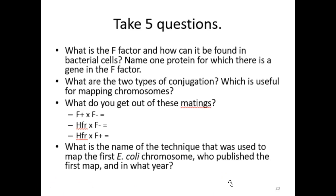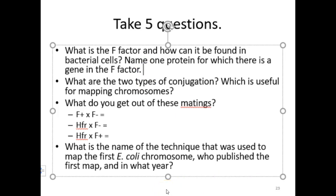If you understood everything in this lecture, you could answer these questions: What is the F-factor, and how can it be found in bacterial cells? Name one protein for which there is a gene in the F-factor. What are the two types of conjugation, and which is useful for mapping chromosomes? What do you get out of an F-plus by F-minus mating, and an HFR by F-minus mating? What is the name of the technique used to map the first E. coli chromosome, who published the first map, and in what year? That concludes this lecture.